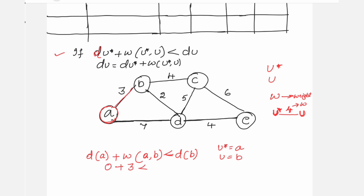The weight on A-B is 3, so 0 + 3 < d(B). Initially A does not know the distance to reach B, so d(B) = infinity. Since 3 < infinity is true, you update d(B) = 3. This infinity gets updated to 3, and A now knows it can reach B at a cost of 3.